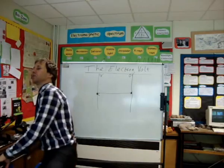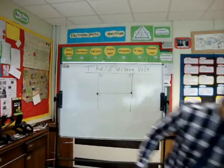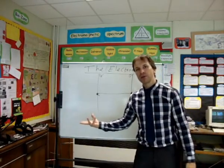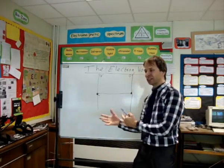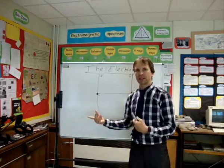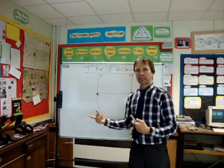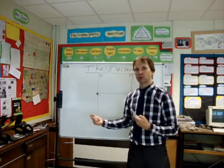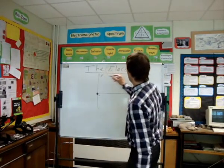So there is a conversion, and the conversion, if you think about it, not surprisingly, is 1.6 times 10 to the minus 19 joules make up 1 electron volt.